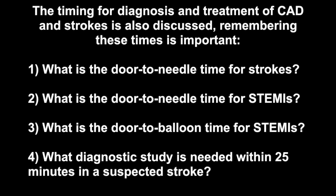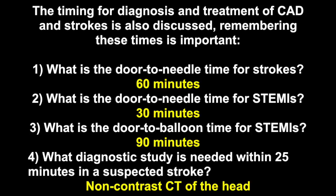The timing for diagnosis and treatment of coronary artery disease and strokes is very important. The door-to-needle time for a stroke is 60 minutes to receive TPA. TPA is also indicated in STEMIs sometimes when you don't have access to a coronary perfusion center, and that is 30 minutes for STEMIs. The door-to-balloon time for cardiac catheterization is 90 minutes for STEMIs. And you want to obtain a non-contrasted CT for a suspected stroke within 25 minutes.